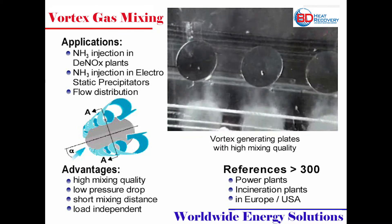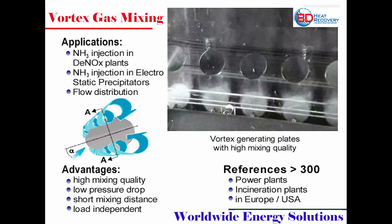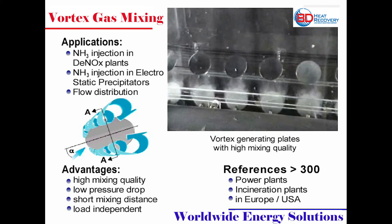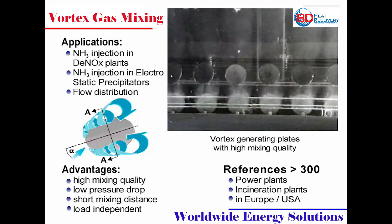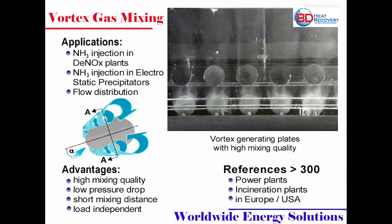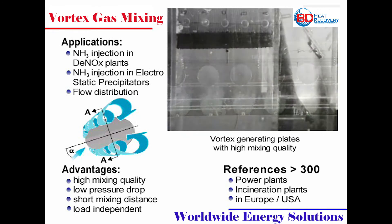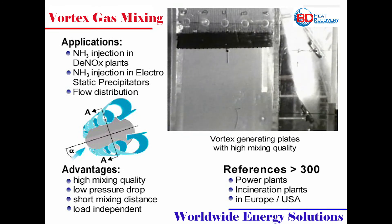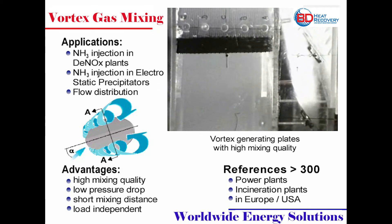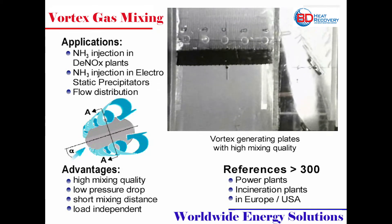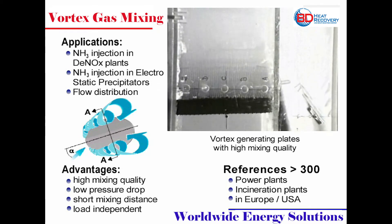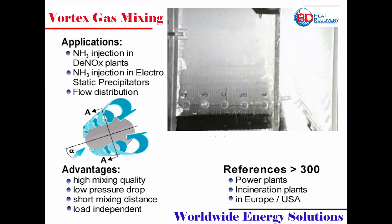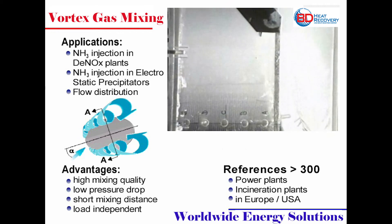The mixer system developed for NH3 injection consists of multiple round discs as shown in the model. The flow rate for the mixture which is injected into the untreated gas can be set at each nozzle. The mixer discs located at the nozzle outlet generate extended vortex with great turbulence directed diagonally to the main direction of the gas flow.